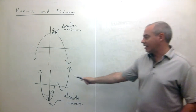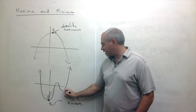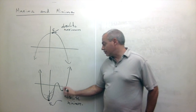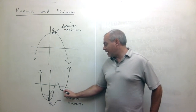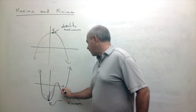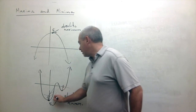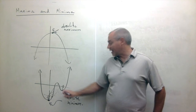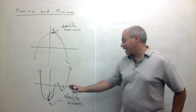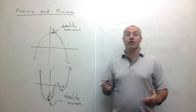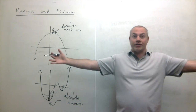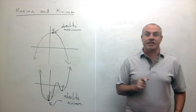I drew this curve for a reason. What about somebody standing at another low-looking point? Well, right around him he seems to be at the lowest point. But if he could see through the graph, he would see there are in fact points that are lower than him. So he is not at an absolute minimum. We have a name for this: it's called a local minimum, or a relative minimum.